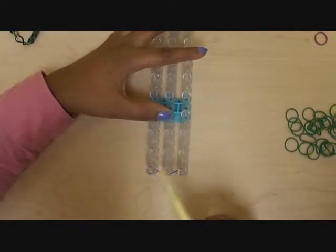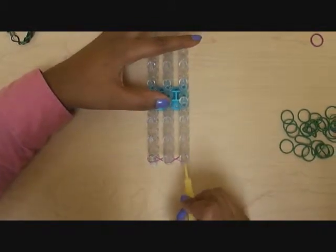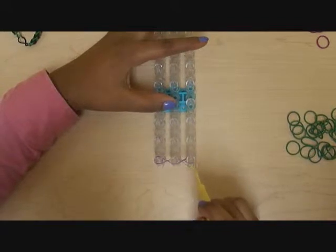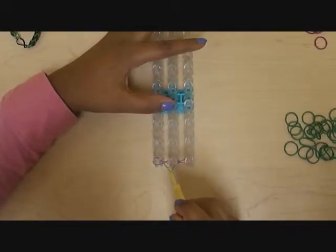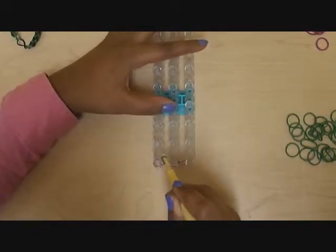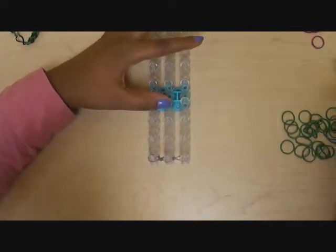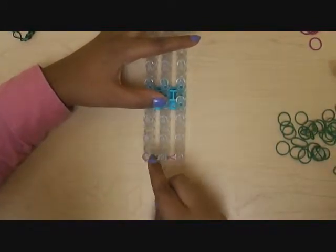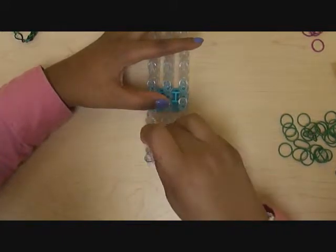So then you're going to grab your hook and take the bottom color and loop it forward on all three pegs, and then you get your first color and do the same exact figure eight.